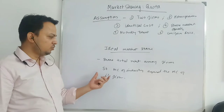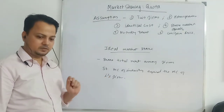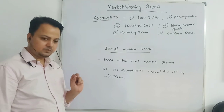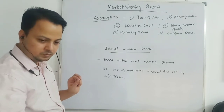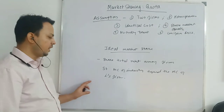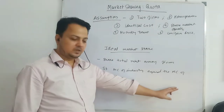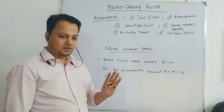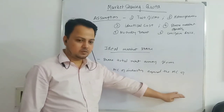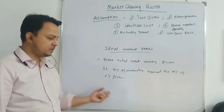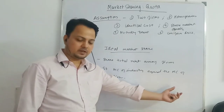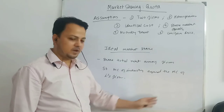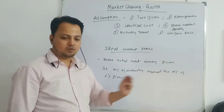When we are going to share the market, we will use this condition. The industry demand is the horizontal summation of the two firms' AR curves and two firms' MR curves, and the marginal cost curve will also be derived by horizontal summation.